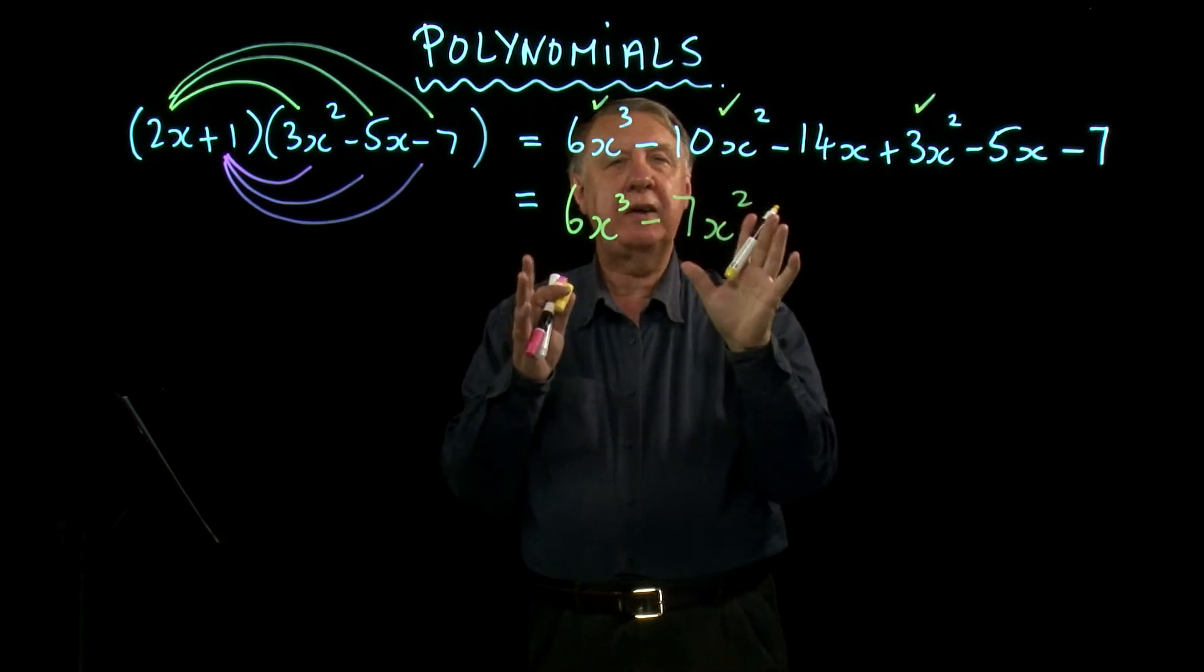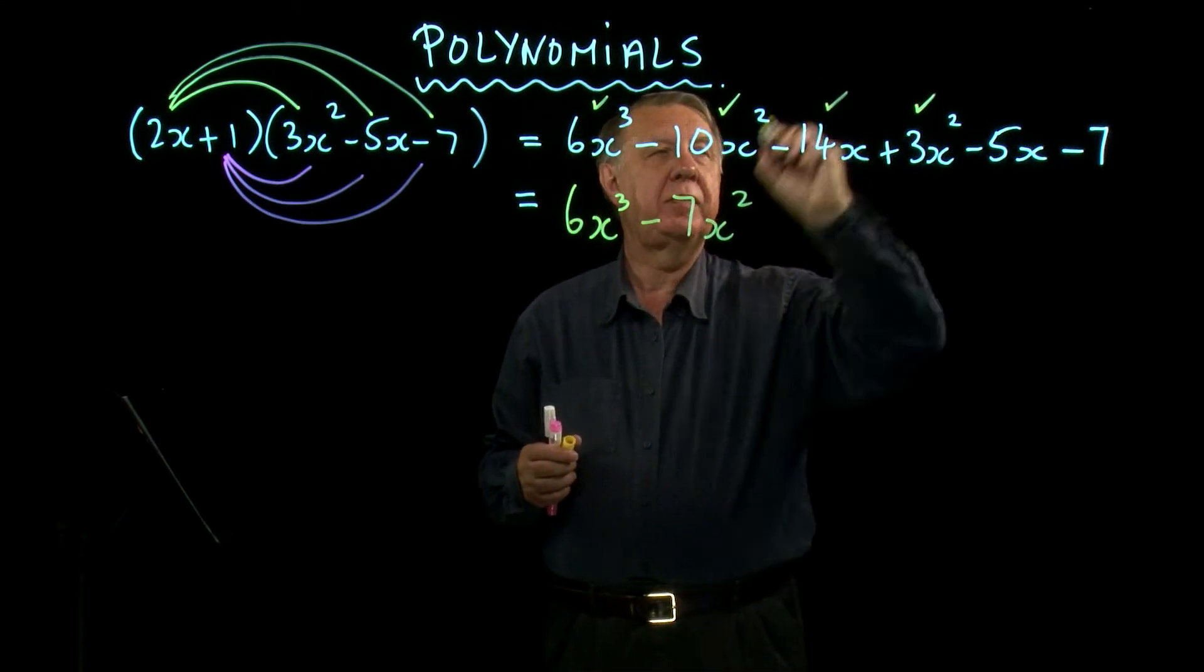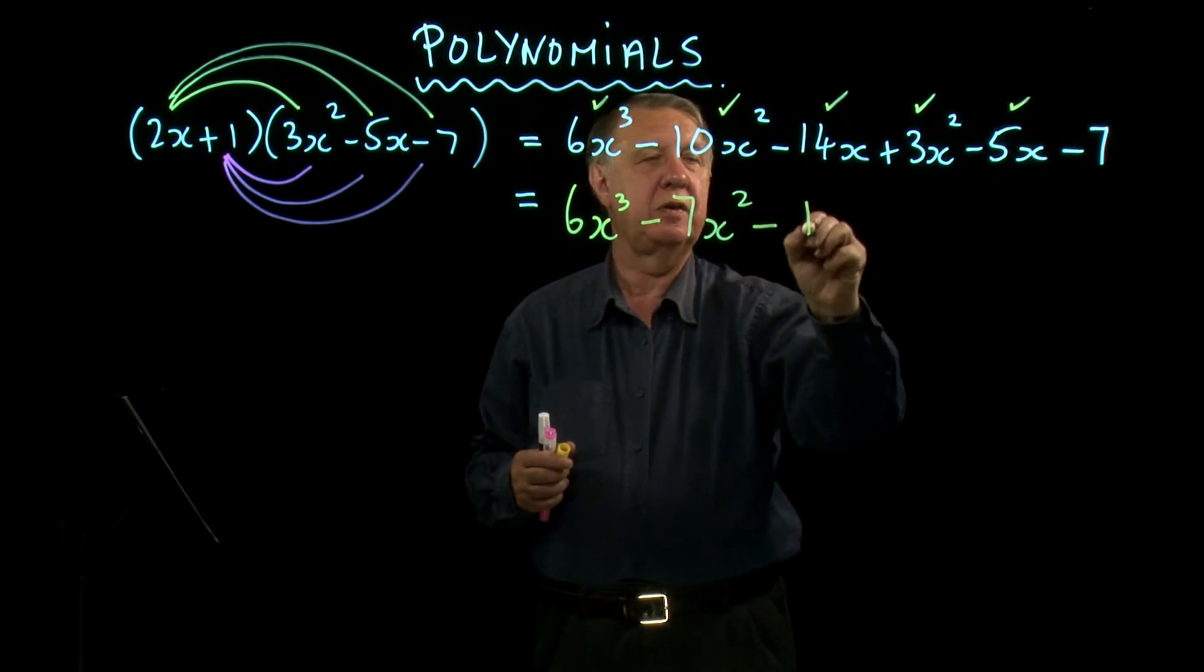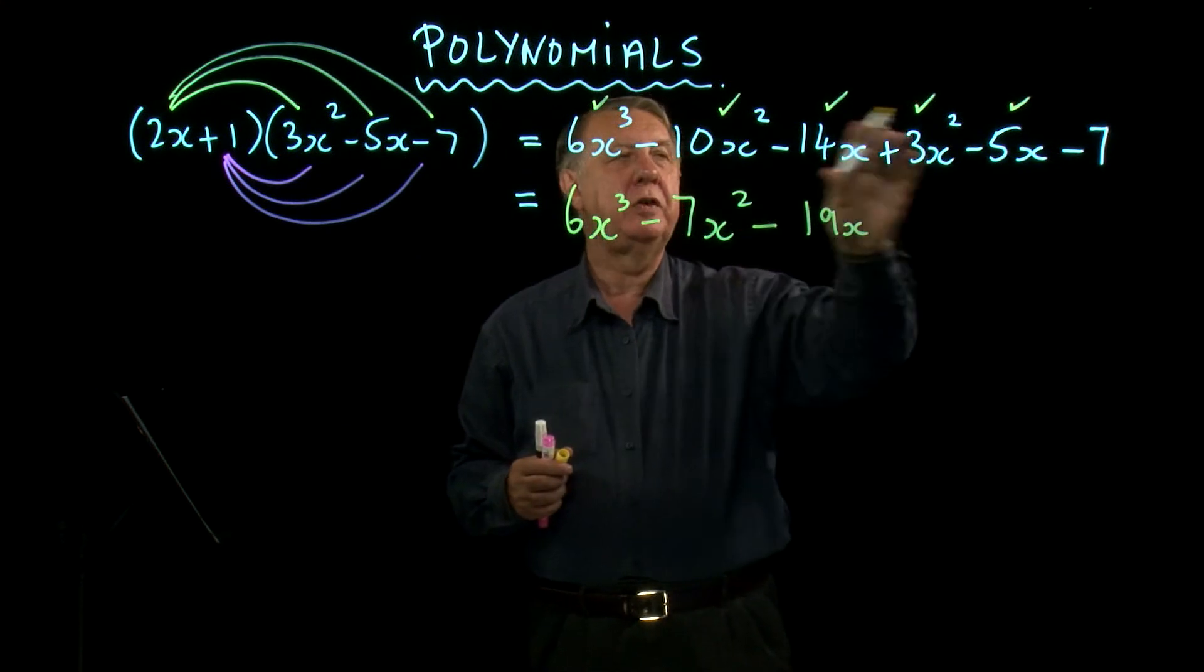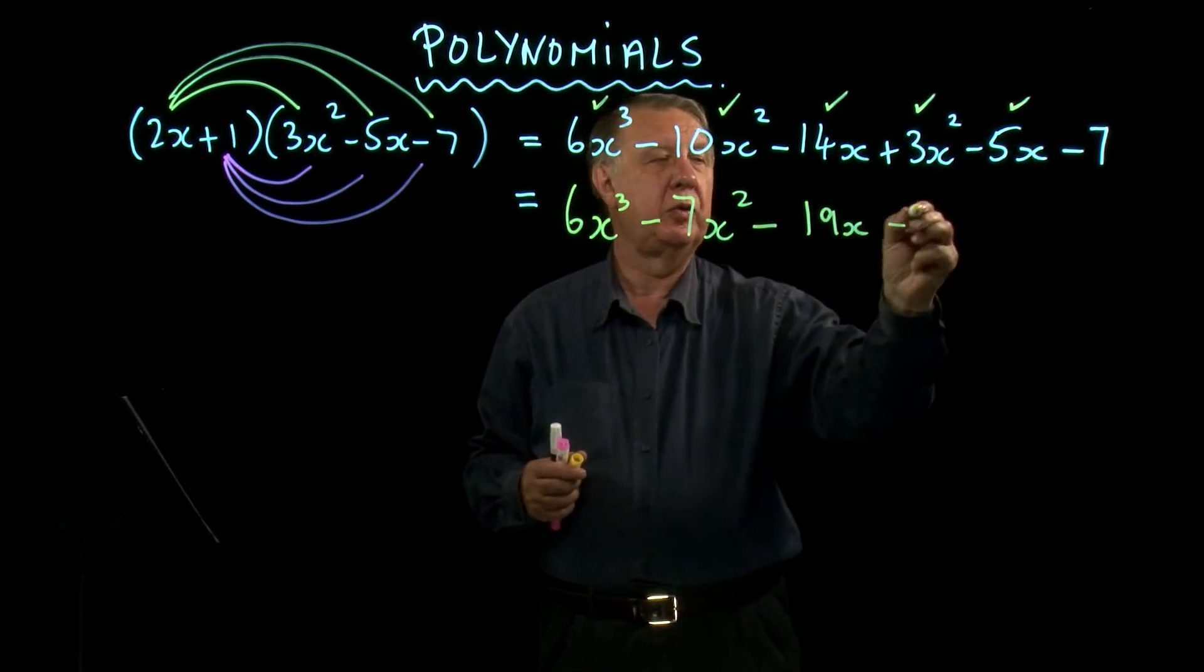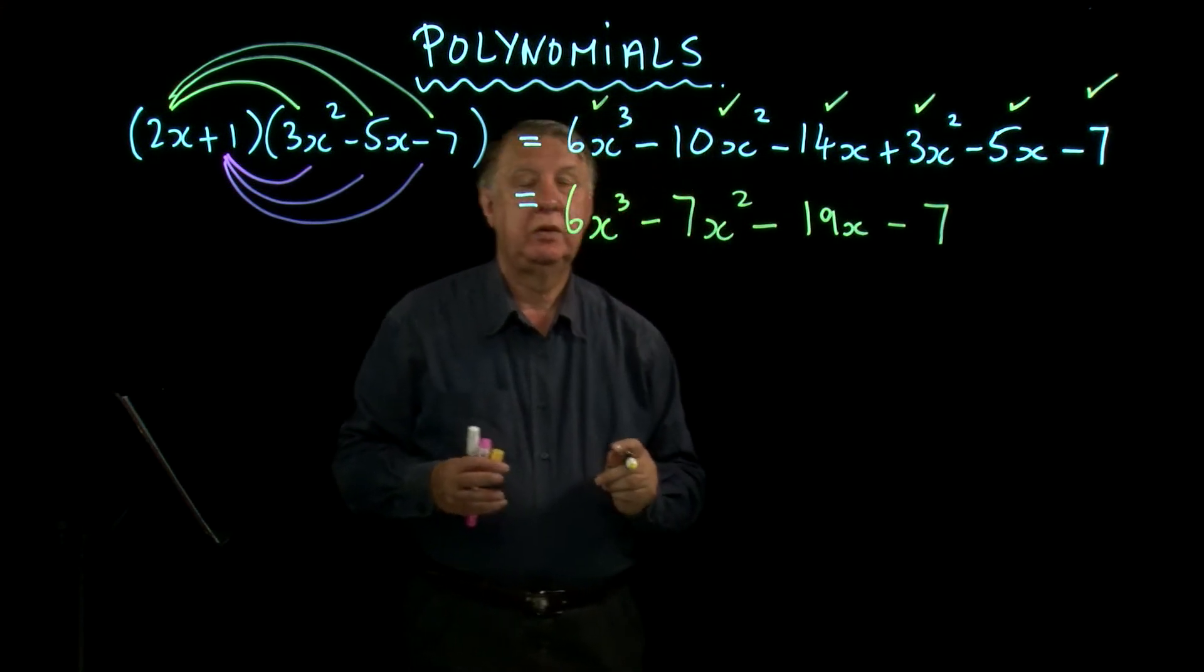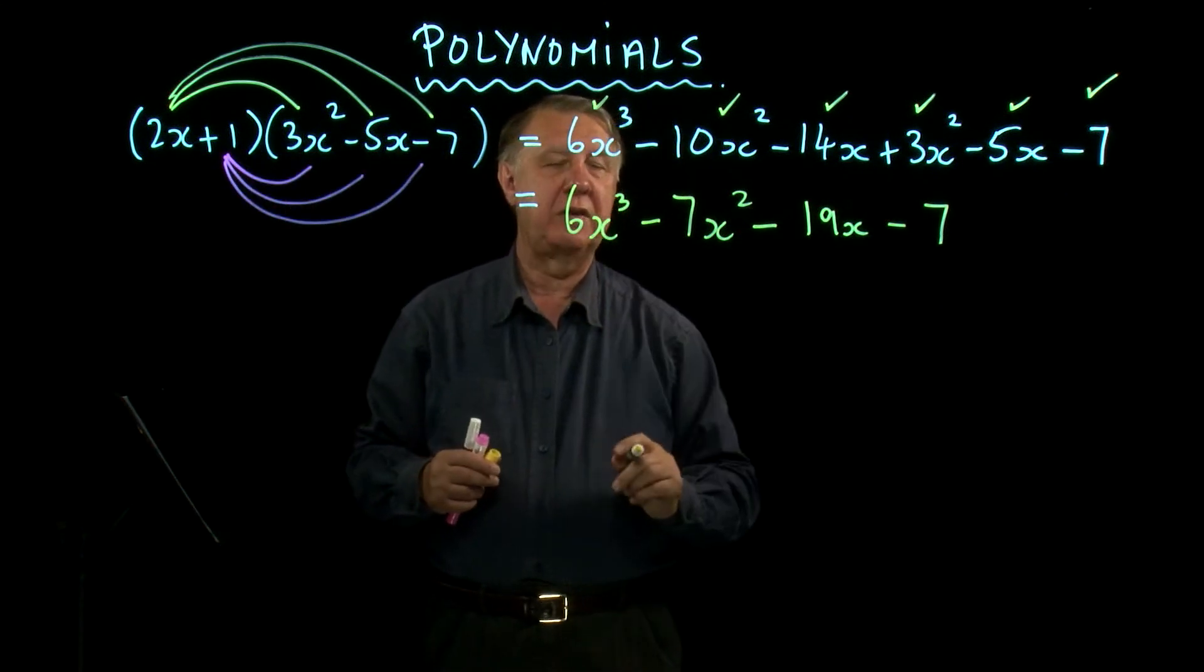So then -10x² + 3x² is -7x². And notice that little tick makes it clearer. -14x - 5x is -19x, and that tells you you've done everything. There's nothing else to worry about except for the -7. And so we've now expanded that bracket and that's the answer.